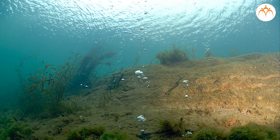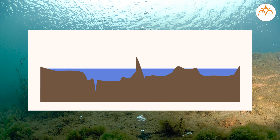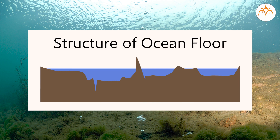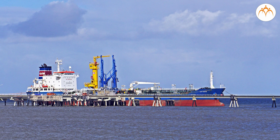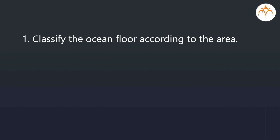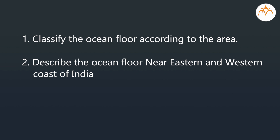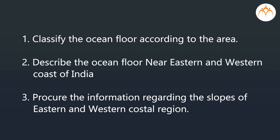Summary: The classification of landforms under water. The structures and the ocean floor. The factors affecting the floor of the ocean. The land near shore which is submerged in sea water is called continental shelf. The formation of continental shelf. The economic importance of continental shelf. Continental slope. Exercise: Classify the ocean floor according to the area. Describe the ocean floor near the eastern and western coast of India. Procure the information regarding the slopes of the eastern and western coastal regions.